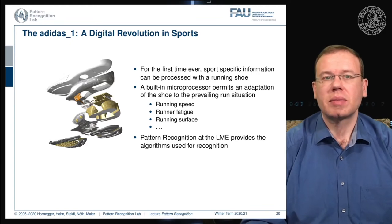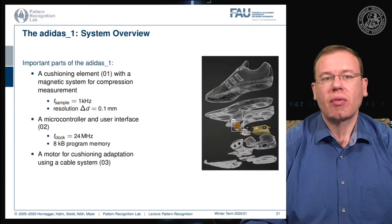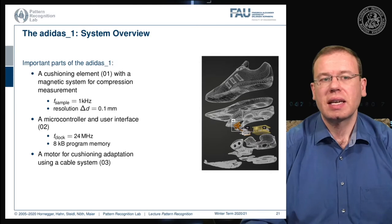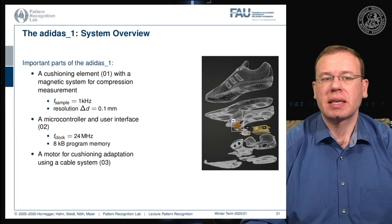The overview: you had this cushioning element indicated by 01 which has a magnetic system for compression measurement, then a microcontroller and user interface that are essentially buttons on the shoe. This had a clock frequency of 24 megahertz and only 8 kilobytes of program memory. There was a motor for adapting the cushion using a cable system.